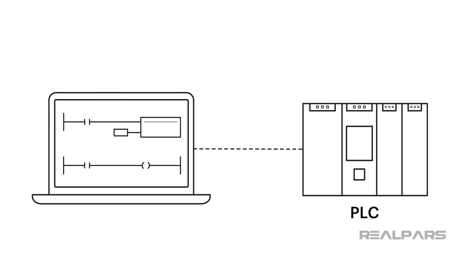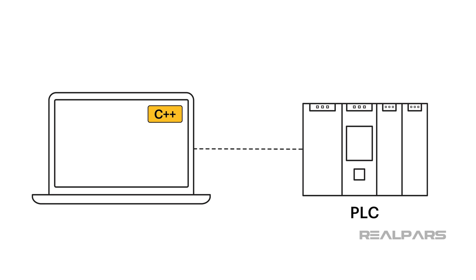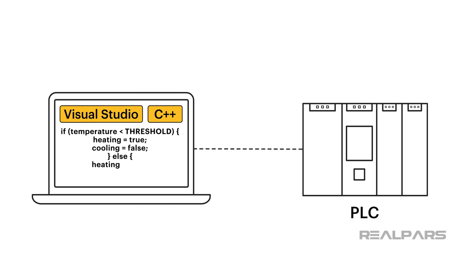For example, to write code in C++ on my computer, I need to have a software programming editor such as Visual Studio. This programming software editor gives me the ability to write codes in C++ on my computer. In fact, Visual Studio works as a container on my computer to hold my codes.